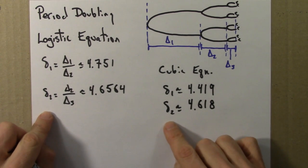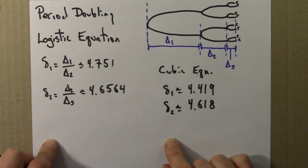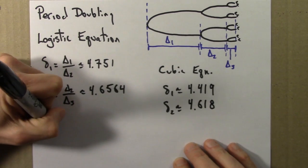However, if we kept going on and calculated delta 3 and delta 4 and delta 5 and so on, these numbers would get closer and closer to each other. So let me write that.